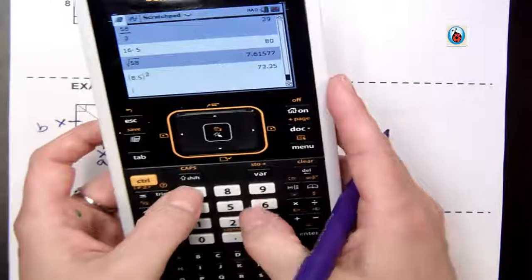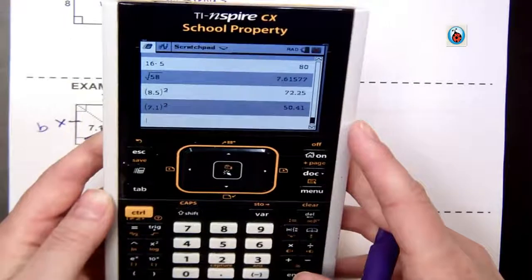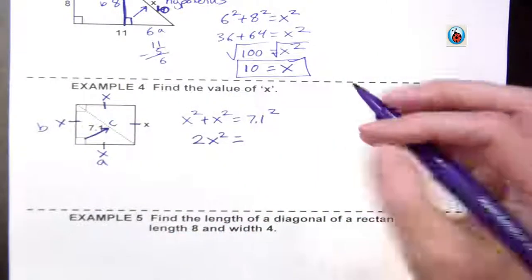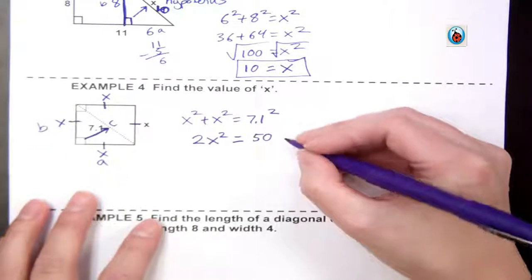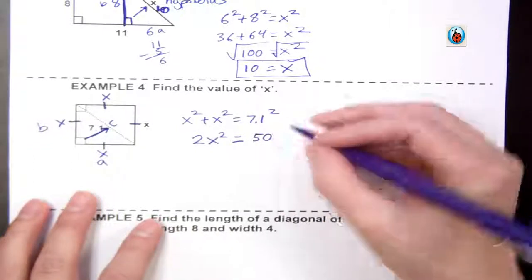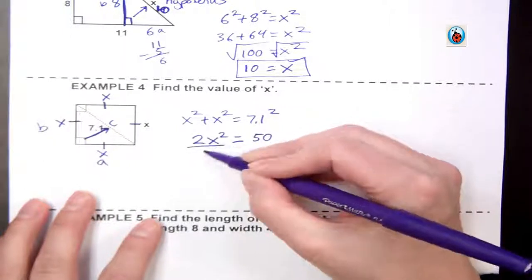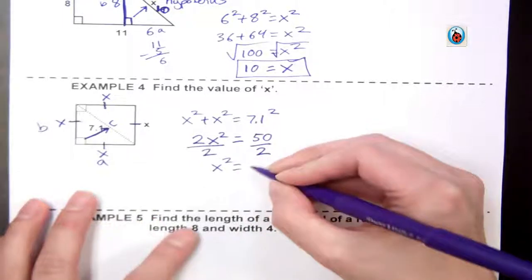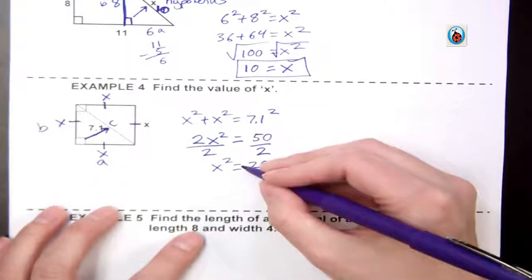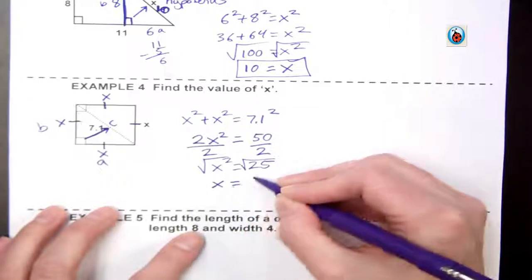2x squared equals 7.1 squared. If I do 7.1 squared with the calculator helping me, it tells me it's 50.41. I could round that to just 50. This time I'm going to round it to a whole number. I just divide by 2. That tells me x squared equals 25. I take the square root of both to give me x equals 5.